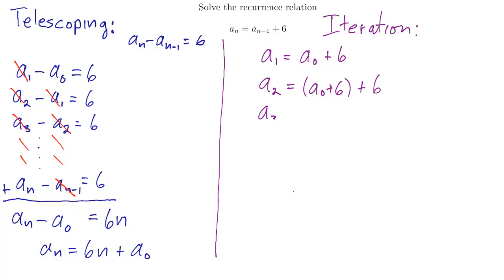Now when I go to write down a_3, a_3 will be a_2 plus 6. And that a_2, I can write that as a_0 plus 6 plus 6. And I'm going to leave it as plus 6 plus 6 instead of plus 12 so I see the pattern.